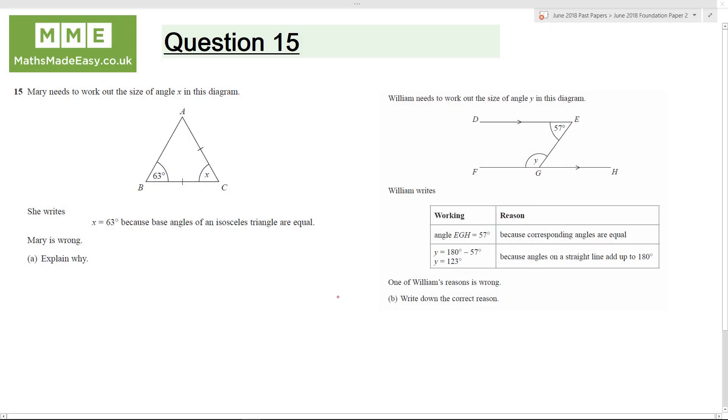Question 15. Mary needs to work out the size of angle x in the diagram. She writes x is 63 because angles in an isosceles triangle are equal.